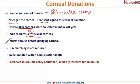HLA matching is not required because the rejection rate is very low. An important point to remember: you should donate the cornea within 6 hours of death, because after that it starts degenerating. The corneal donation team needs to be informed within 6 hours and they will come and collect the eyeball.